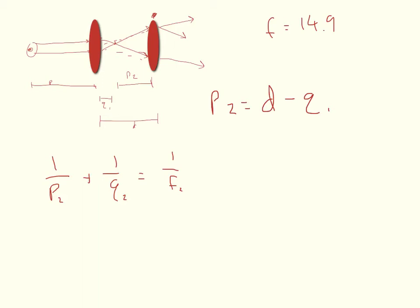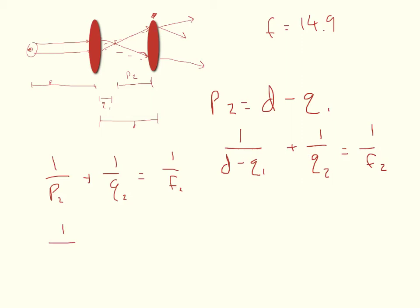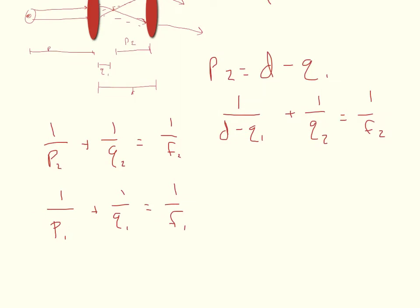If I take the whole distance D and come back the distance Q1, I've got P2. I substitute that in: 1/(D - Q1) + 1/Q2 = 1/F2. I need to solve for Q1 first. Using the thin lens equation: 1/P1 + 1/Q1 = 1/F1, we get Q1 = (P1 × F1) / (P1 - F1).